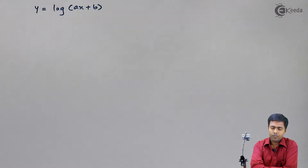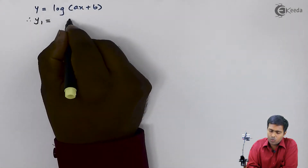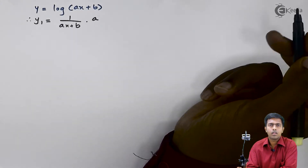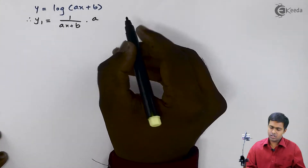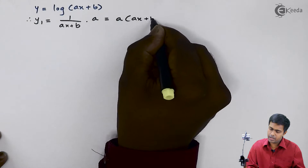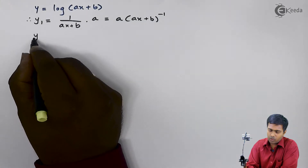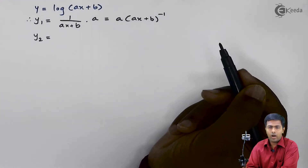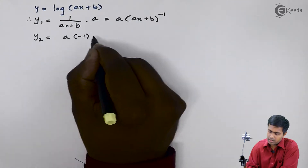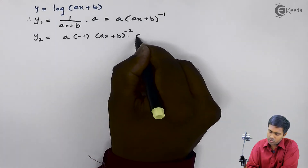So let us proceed. y1 here is nothing but 1 upon (ax plus b) into a. I can rewrite this term as a into (ax plus b) raised to minus 1. Now let us find out y2. So y2 is nothing but a as it is — this will become minus 1 (ax plus b) raised to minus 2 into a again.